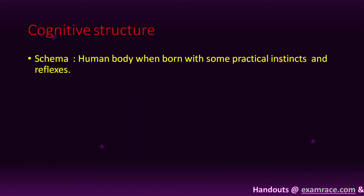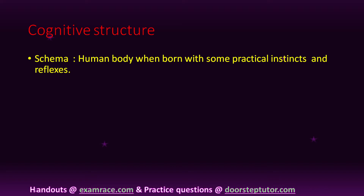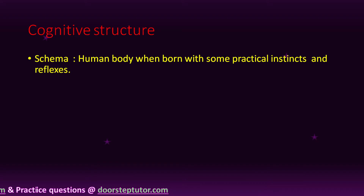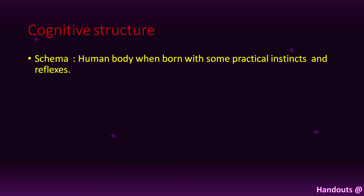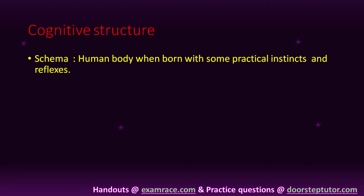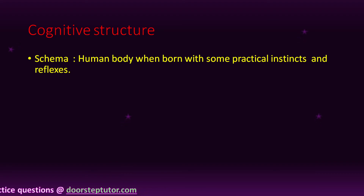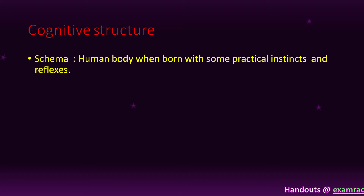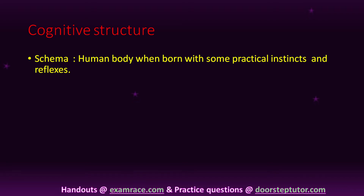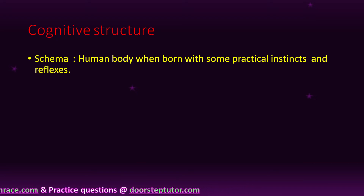Cognitive structure contains schema. What is schema? The human body is born with some practical instincts and reflexes. Practical instincts means innate abilities which are possessed by every person. Reflexes refers to environmental changes — for example, when we touch a hot thing, we suddenly remove our hand. So schema is practical instincts and reflexes: the innate abilities in our mental abilities shaped by environmental changes. Schema is a pocket of information stored in our mind.